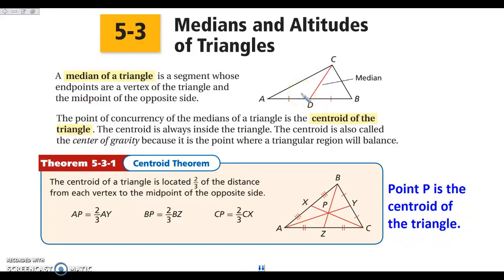Our medians are concurrent, so that means that they meet in one point. And that one point is called the centroid. A fun fact about the centroid is it is also called the center of gravity, because if you were to cut out a triangle out of cardstock or heavier weight paper and find the centroid, if you put the triangle on the tip of your pencil at the centroid, it will be balanced. Also, the centroid, like your incenter, is always going to be inside the triangle.